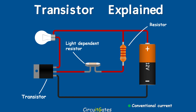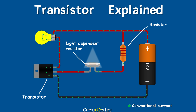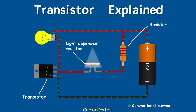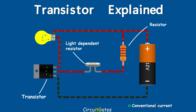When light falls on the surface of the light-dependent resistor, a small amount of current flows in the control path, causing a high current flow in the power path and the light bulb illuminates. When there is no light falling on the surface of the light-dependent resistor, there is no current in the control path and also no current in the power path, and the light bulb is off.